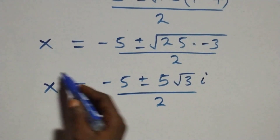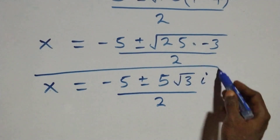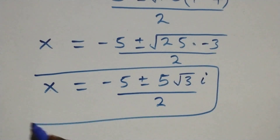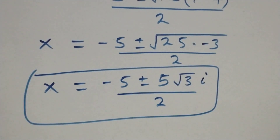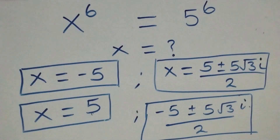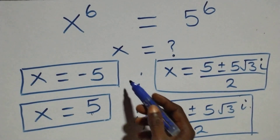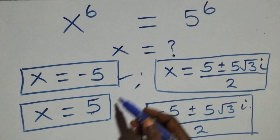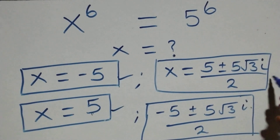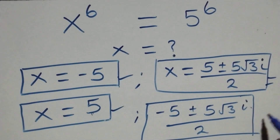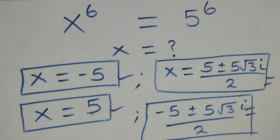Therefore, altogether in this problem, we have six solutions: two real solutions and two complex solutions from the first case, and two complex solutions from the second case.